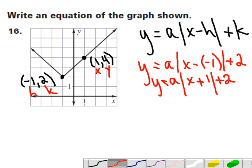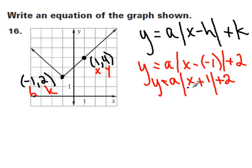And I'm going to substitute that in here for x and y in the equation. So since y is 4, 4 is equal to a times the absolute value of x, which is 1, plus 1, plus 2.